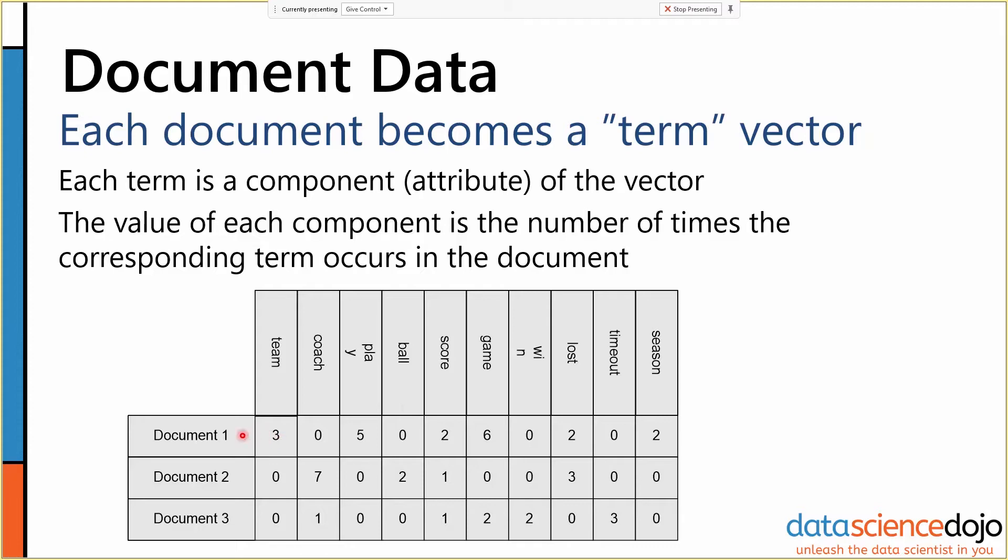What we have here is each row, each data object is represented by what we call a term vector. This term vector, and there's several ways you can do it, but in this case it just counts the number of times a given word appears in the document.